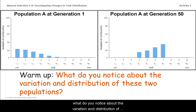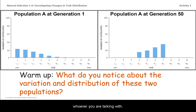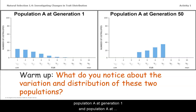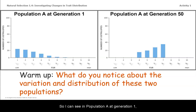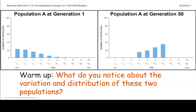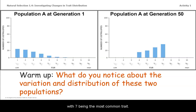What do you notice about the variation and distribution of these two populations? Take a moment and write it down or check in with whoever you're talking with. One thing I noticed: we have Population A at generation one and Population A at generation 50, which tells me time has gone by. The trait we're focusing on is the amount of fur of the Australopes. At generation one, most Australopes have low amounts of fur. At generation 50, most have medium to high amounts of fur, with seven being the most common trait.